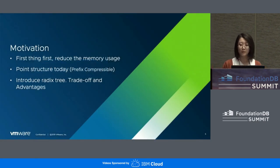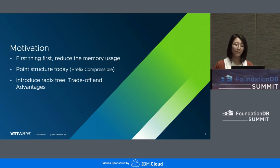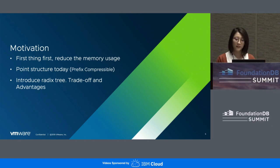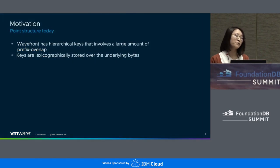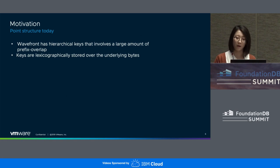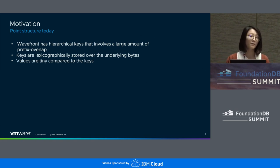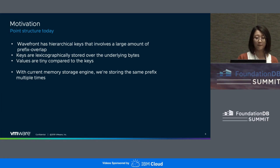The motivation: why would we want a new memory storage engine? What's the obvious weakness with the existing one? First, we try to be more space efficient. If we can build a new type with less memory usage, that will bring benefits to all clusters in Wavefront. In order to do so, we need to revisit the Wavefront key structure. Wavefront has hierarchic keys that involve a large amount of prefix overlap. Keys are lexicographically stored over the underlying bytes — for example, character 0 is always stored before character 1, and keys starting with the same prefix are stored together. Values are tiny compared to the keys. The problem is, with the current memory storage engine, we're storing the same prefix multiple times — there is literally no prefix compression at all. That's the reason why we decided to adopt a different key-value container using a Radix Tree.